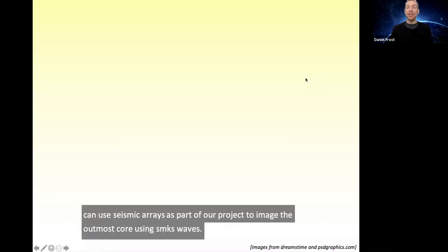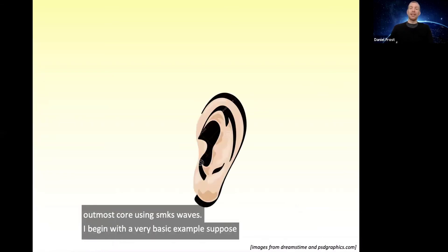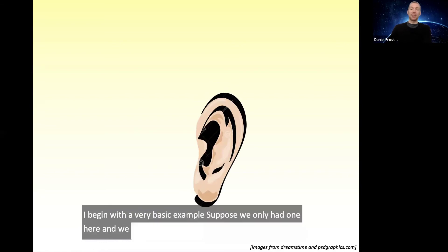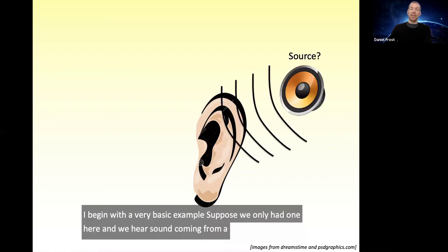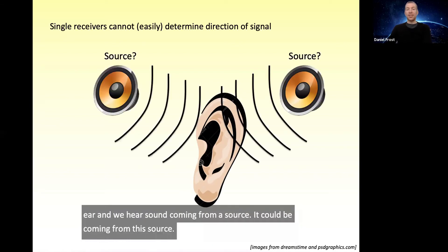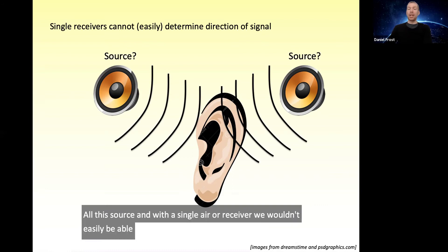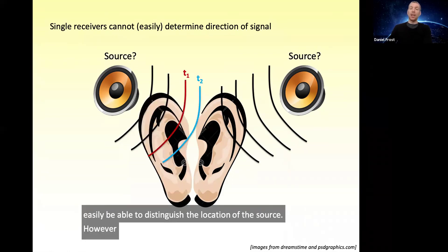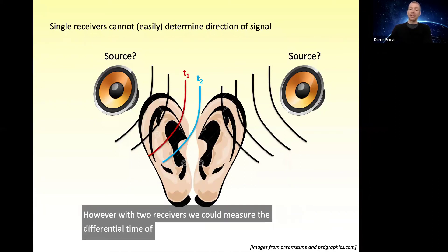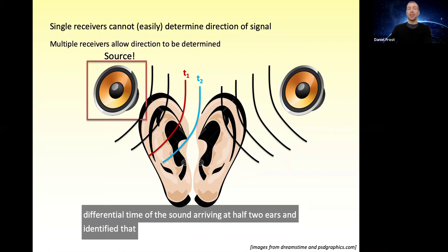I'll begin with a very basic example. Suppose we only had one ear and we hear a sound coming from a source. It could be coming from this source or this source, and with a single ear or receiver, we wouldn't easily be able to distinguish the location of the source. However, with two receivers, we could measure the differential time of the sound arriving at our two ears and identify that the source of the sound is on our right.